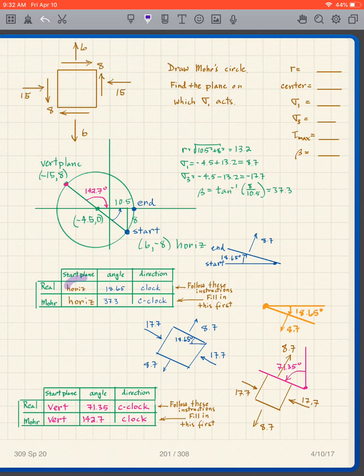So it says horizontal plane. I draw a horizontal plane, 18.65 clockwise. I go 18.65 clockwise. There I am, I'm on that plane, and on that plane is my sigma 1, which I already know to be 8.7.